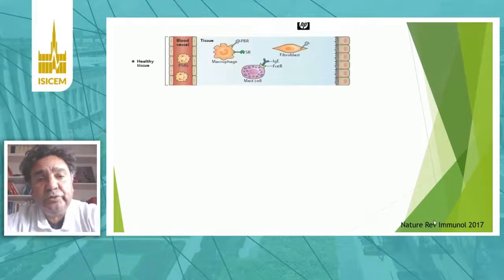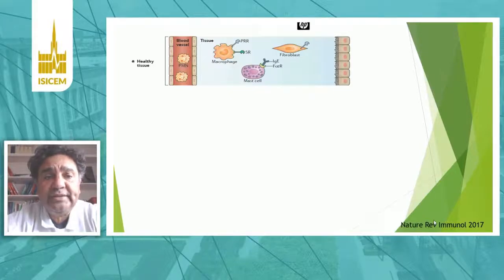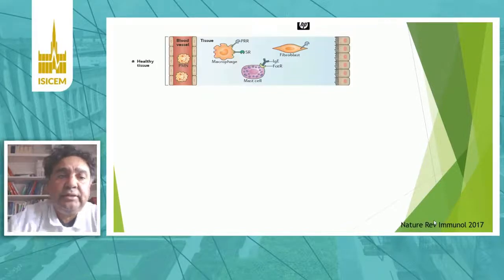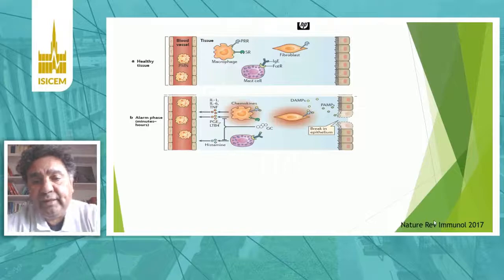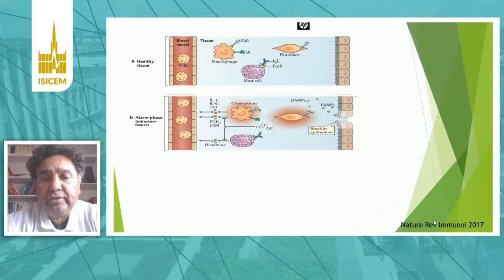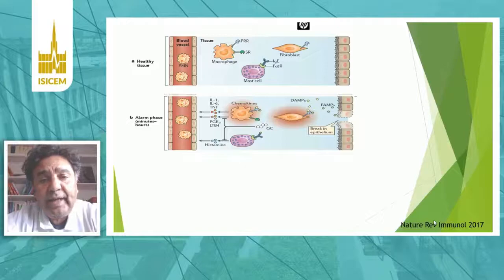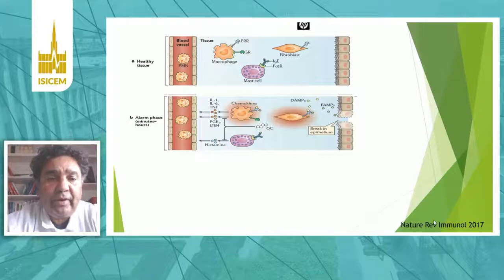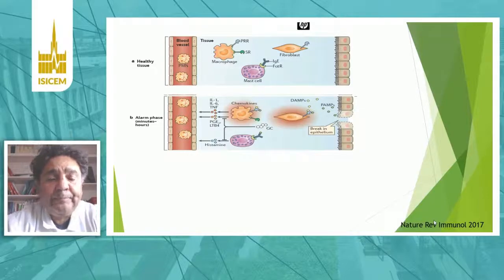In healthy tissues, there are resident cells at the level of the tissues, including fibroblasts, mast cells, and macrophages. These cells are there to sense any threat to the tissues. In case of breaking in the epithelium, danger-associated molecular patterns or pathogen-associated molecular patterns molecules are released and will activate these resident cells — fibroblasts, macrophages, and mast cells. These activated cells will then release a number of inflammatory mediators aimed at regulating the cardiovascular responses and the recruitment of additional cells.